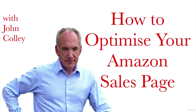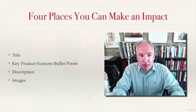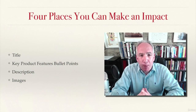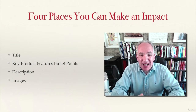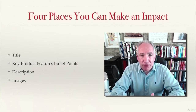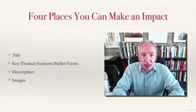In this video I want to talk to you about how you can optimize your Amazon sales page. There are four places that you can make an impact and we're going to deal with these in turn, but they are the title, the key product features bullet points, the description and the images.